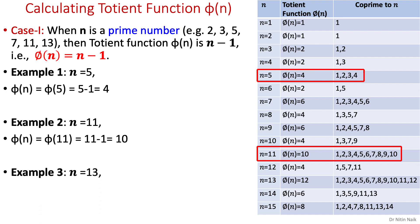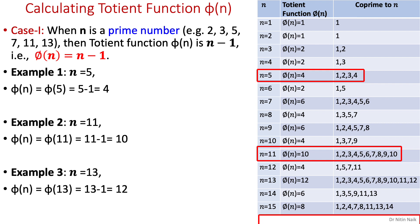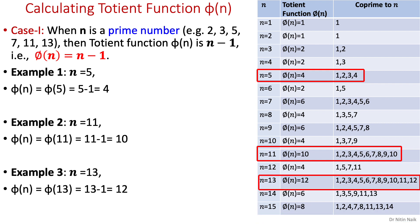Another example: the Totient function of prime number 13 is 13 minus 1 equals 12. If you look at the table, that is correct. It is very easy to calculate the Totient function of a prime number.